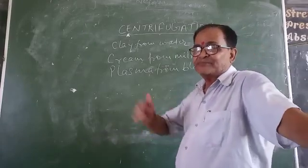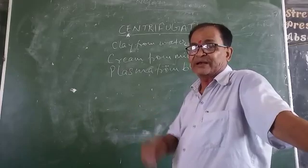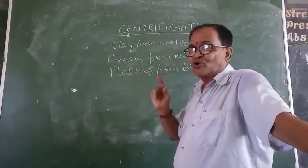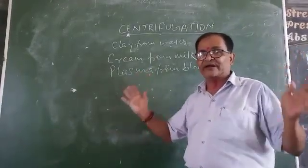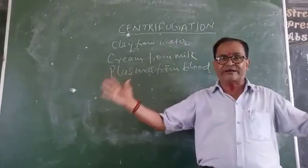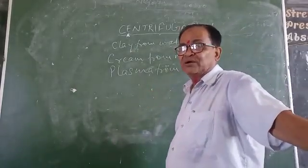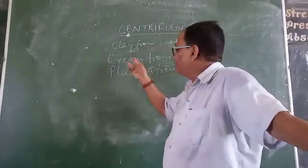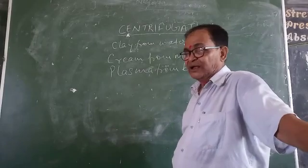We know that there are many types of milk available at the dairy. In the dairy, cream is separated from the milk by the process of centrifugation. For this purpose, milk is taken in large containers and rotated using a big centrifuge — a rotating machine. Cream, being the lighter component, comes up and is separated. The remaining milk is known as skimmed milk.